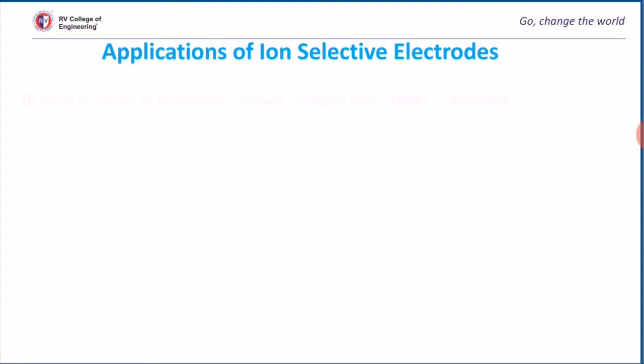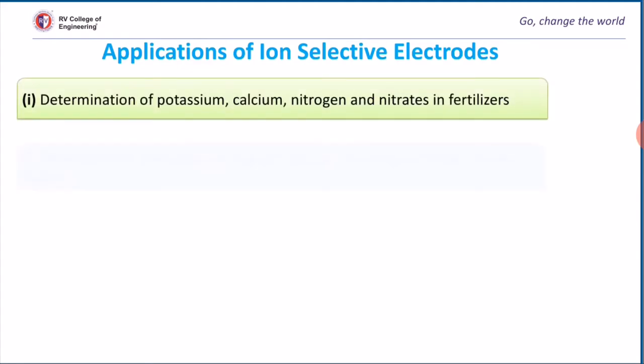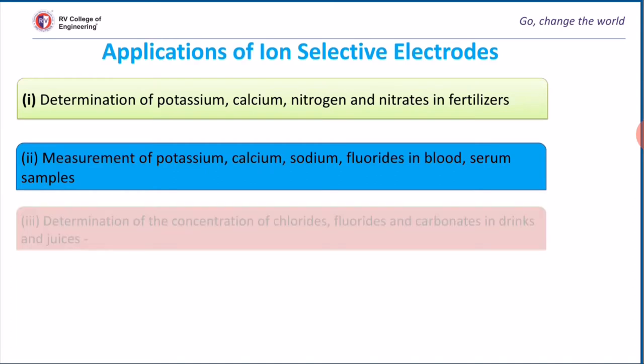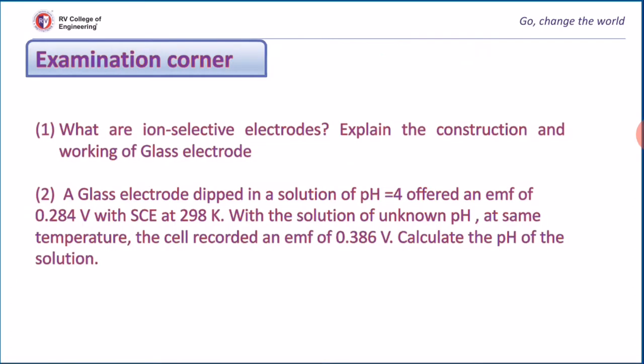Let us see a few applications of ion selective electrode. We can find the amount of potassium, calcium, nitrogen and nitrates in fertilizers. It helps find the amount of potassium, sodium, and fluoride in blood samples. We can find the concentration of chloride ions and carbonate in drinks and juices also.